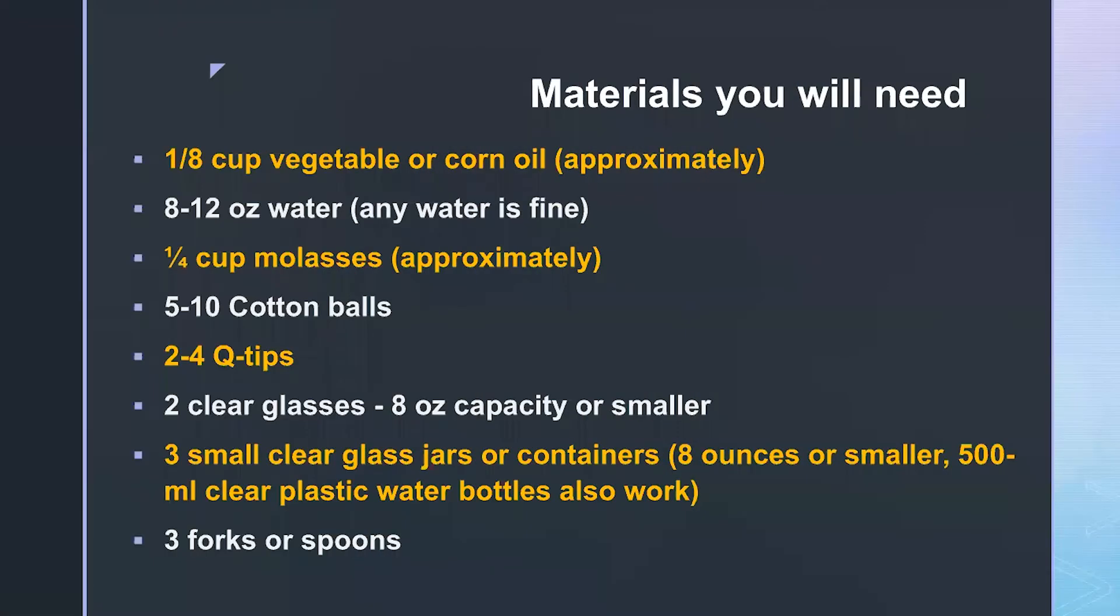Let's go over the materials you will need for this activity. We'll need some vegetable or corn oil, about an eighth of a cup approximately. We'll need eight to twelve ounces of water, any kind of water is fine. Some molasses, about a fourth of a cup, again approximately. Some cotton balls, five or ten of them. Some q-tips, two to four should be fine. And then we'll need a couple of clear glasses that are eight ounces capacity or smaller, and then three other small clear glass jars or containers. They could also be smaller clear glasses or a clear plastic water bottle. All of that should work. And lastly, we'll need some forks or spoons. Three of them should be fine, and they could be plastic or metal.